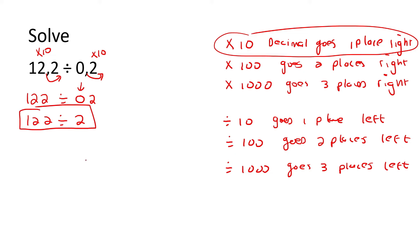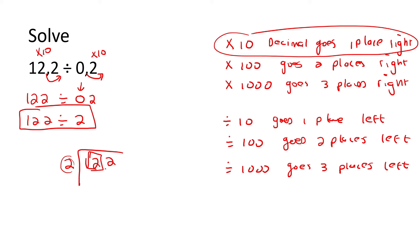So now you can divide that however you want. The number two cannot go into the number one. Now we're going to test: can the number two go into the number 12? Yes, it can six times — there'll be no remainder. And then the number two goes into the number two once. So the answer is 61.